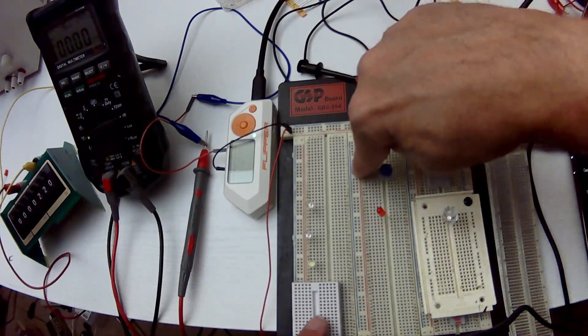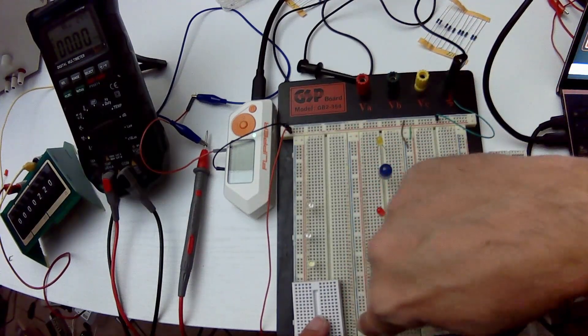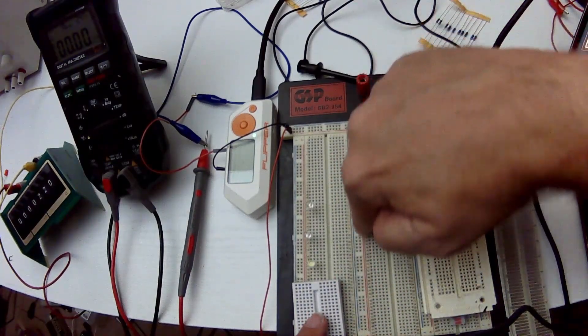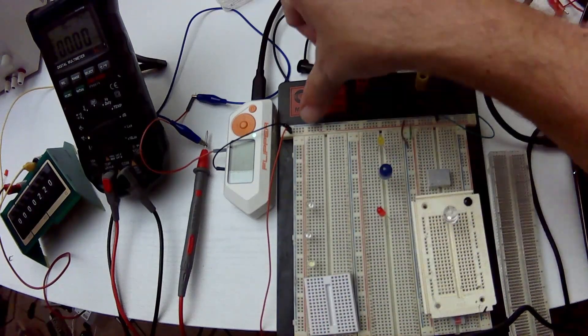Some breadboards have rails. So the rail is a huge clip that connects all the way down. That blue line is one wire and everything in the red is one wire, even though it's in groups of five.